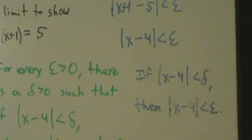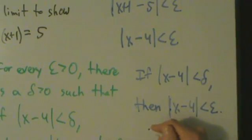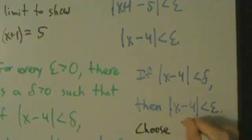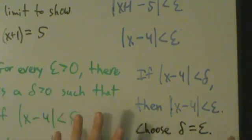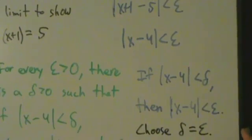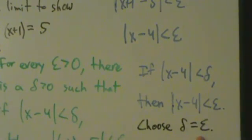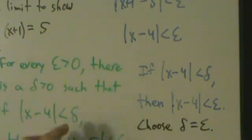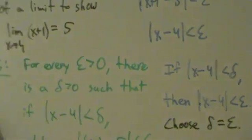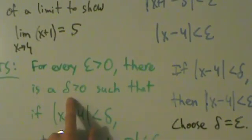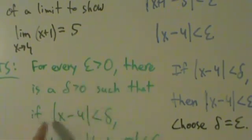Well, how do we guarantee that? The next step is to pick a delta that's going to make this always true. We're just going to choose delta equal to epsilon. We're not working with any specific numbers here when we have epsilons and deltas. We're going to pick a delta, and the delta depends on the epsilon. Because we're given an epsilon and we want to give back a delta, and delta is allowed to depend on the epsilon.